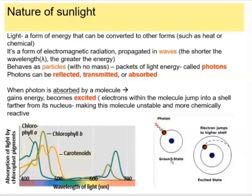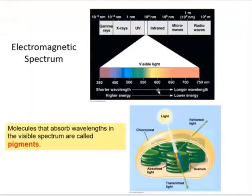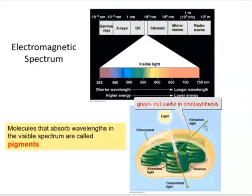Here we're looking at a diagram of the range of wavelengths of light and where different pigments absorb best. Not every pigment absorbs the same wavelength — there's a reason they distribute in different ways. Visible light can be separated by a prism to reveal the colors of the rainbow. The shorter the wavelength, the higher the energy; the longer the wavelength, the lower the energy. In chloroplasts, white light is absorbed, but green is reflected.